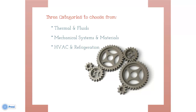First, some background information. The mechanical PE exam is offered in April and October and consists of an eight-hour exam separated into two four-hour sessions — a morning session and an afternoon session. The morning session consists of a breadth session covering topics from three categories: thermal and fluids, mechanical systems and materials, and HVAC and refrigeration. The afternoon session consists of a depth session into one of the three categories. This video focuses on the HVAC and refrigeration category.